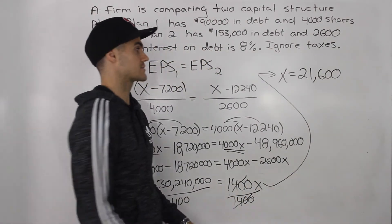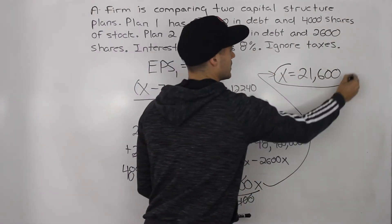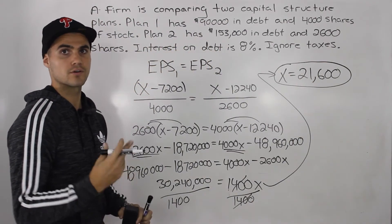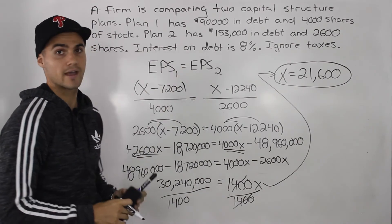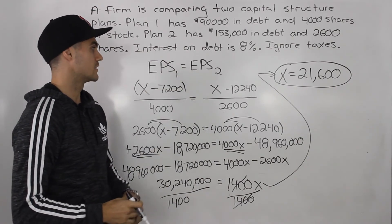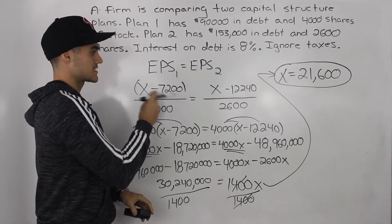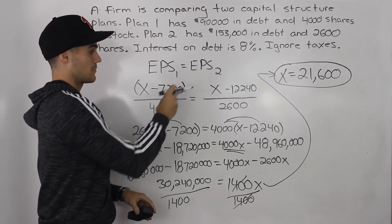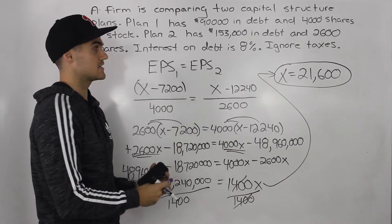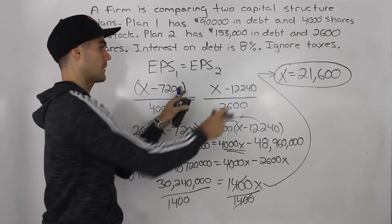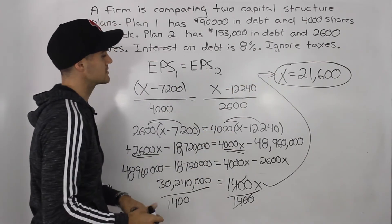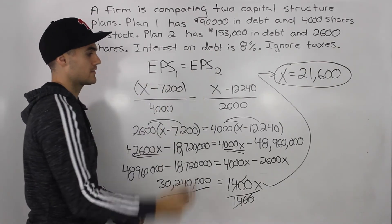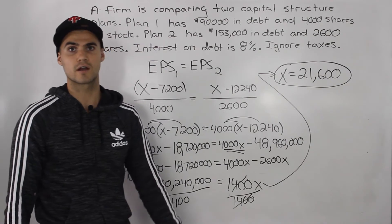So our break-even EBIT is $21,600. That is the earnings before interest and taxes that will make the EPS under both plans identical. To summarize: make an expression for EPS under both plans, forget about (1 - T), substitute x for EBIT, set them equal, and solve. That gives you the final answer.